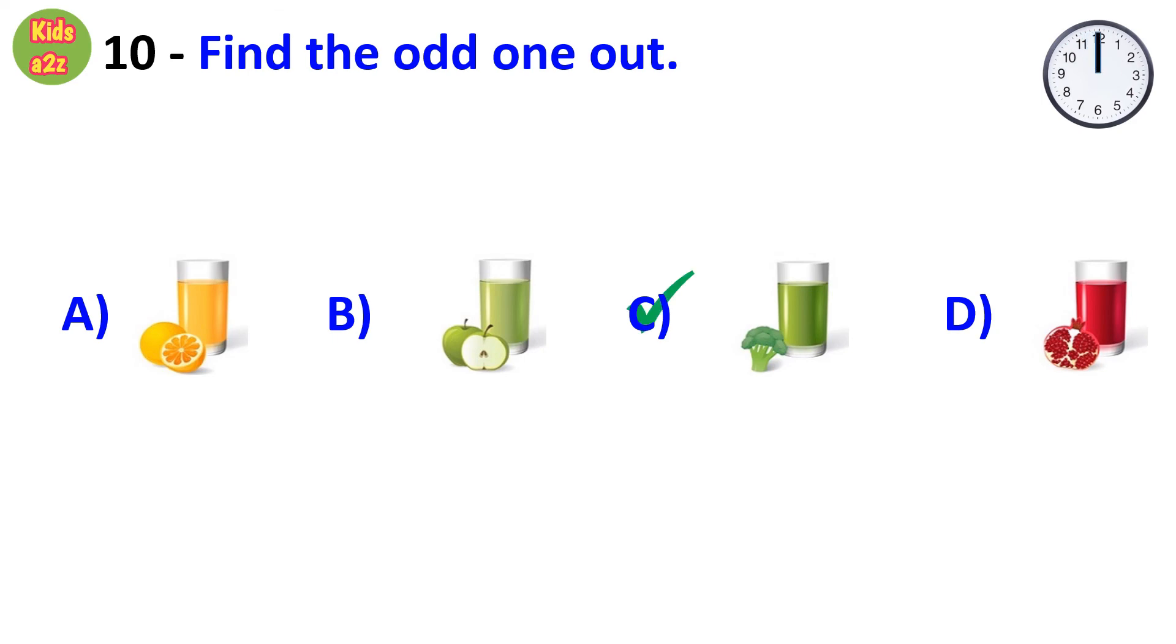Answer is option C, because only option C is vegetable juice. Others are fruit juice. That's all for now.